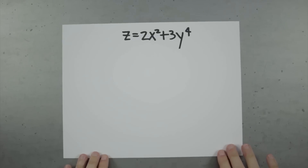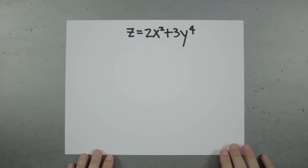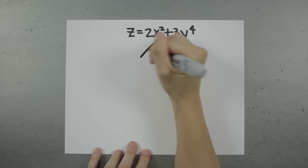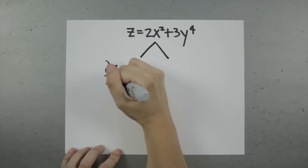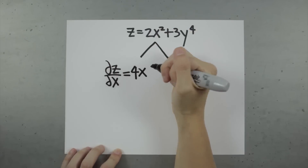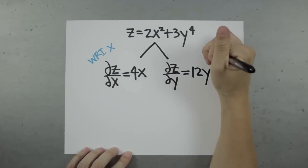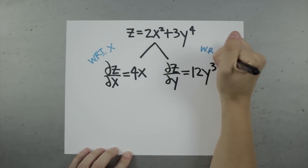Partial differential equations, or partial derivatives, are what you get when you have a function defined in terms of multiple variables and you take the derivative with respect to only one of them. For example, you have the equation z equals 2x squared plus 3y to the fourth, and you take the partial derivative of z with respect to x, and the partial derivative of z with respect to y. You get one partial derivative equation for each variable.